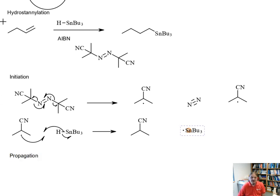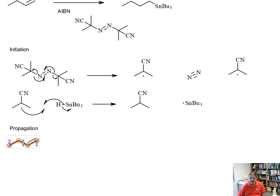The propagation mechanism then is a radical addition step followed by a hydrogen abstraction. It's the same pattern of steps that we've drawn for any other radical type addition reaction. Our tributyl tin radical reacts with the alkene and produces a carbon radical, and that carbon radical will appear at the more substituted position, just like every other one of these reactions.